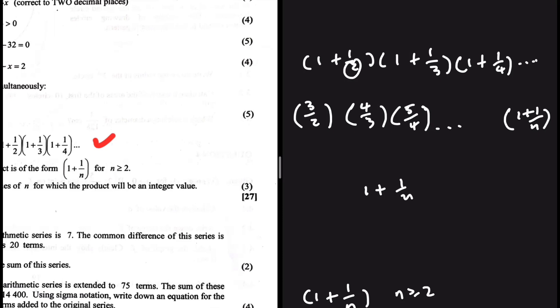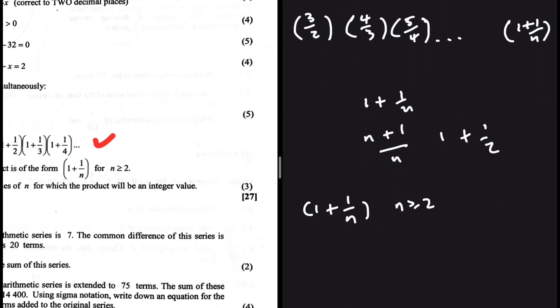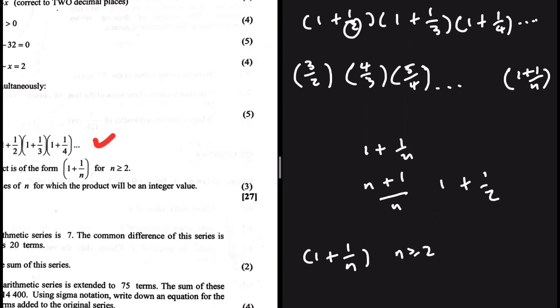1 plus 1 over n is the same as n plus 1 over n. Because if we give both those two terms on the numerator a denominator of n we'd end up with 1 plus 1 over n. So instead of writing 1 plus 1 over n, we can write n plus 1, everything over n. But it does not end there.